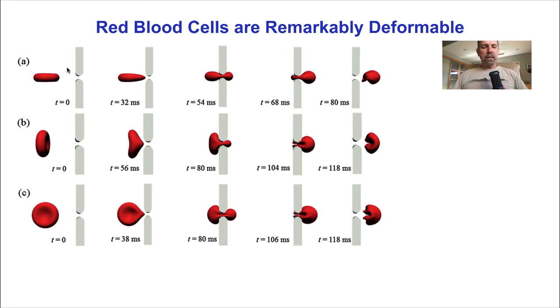Older red blood cells become less deformable and get trapped in the spleen, where they are phagocytosed. Red blood cell deformability is also affected in some diseases, notably sickle cell disease, a serious genetic disorder in which red blood cells become stiff and sickle-shaped results in anemia and many other complications including infection, stroke and kidney failure.